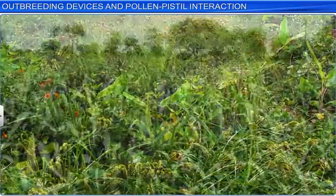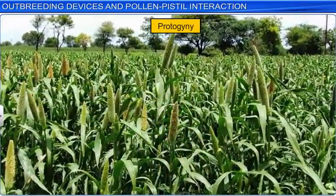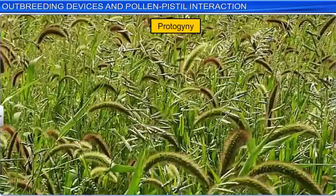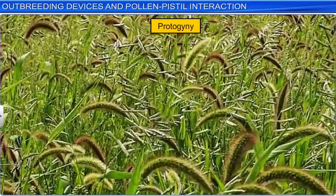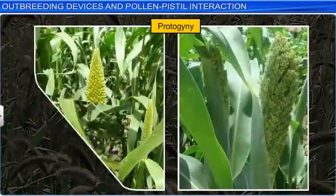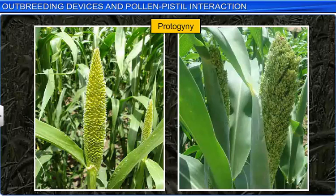Whereas in protogyny, which is observed in millet or bajra, the gynoecium matures prior to the androecium — that is, the stigma becomes receptive long before the pollen is released.